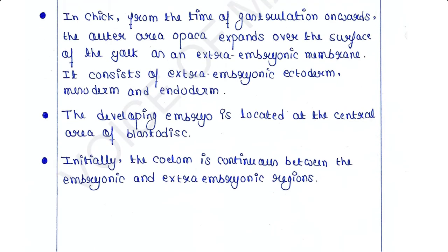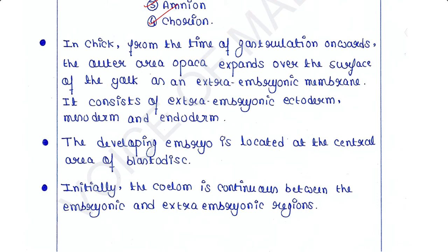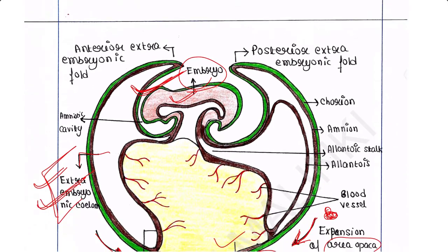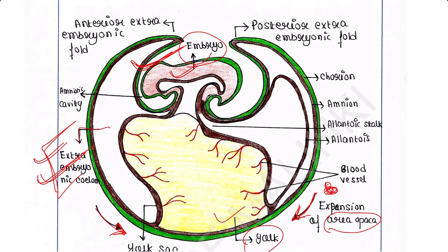Notes: In chick, from the time of gastrulation onwards, the outer area opaca expands over the surface of the yolk as an extra-embryonic membrane. It consists of extra-embryonic ectoderm, mesoderm, and endoderm. The developing embryo is located at the central area of the blastodisc. Initially, the coelom is continuous between the embryonic and extra-embryonic regions.